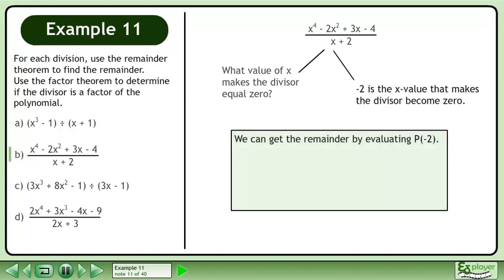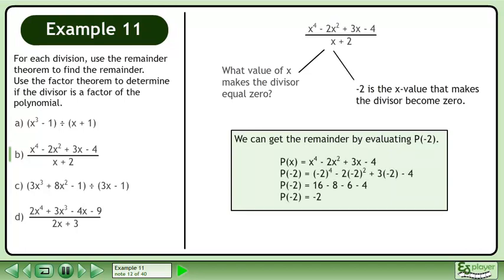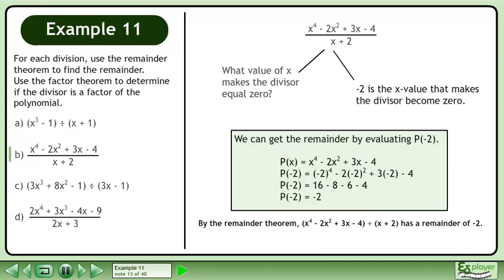We can get the remainder by evaluating p at negative 2. p at negative 2 evaluates to negative 2. By the remainder theorem, x to the power of 4 minus 2x squared plus 3x minus 4 divided by x plus 2 has a remainder of negative 2.